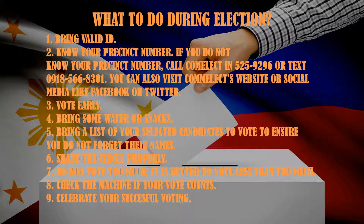Paraan para hindi masayang ang boto sa araw ng eleksyon. Una, magdala ng valid ID. Pangalawa, alamin ang precinct number kung saan kababoto. Pwede kang tumawag sa Comelec sa 525-9296, o mag-text sa 0918-566-8301. Pwede mo din visitain ang Comelec website o social media kagaya ng Facebook o Twitter. Pangatlo, bumoto ng maaga. Pangapat, magdala ng inumin at merienda dahil mahaba-haba ang pipilahin mo. Panglima, magdala ng lista ng iboboto para mapabilis ang iyong pagboto at hindi mo makalimutan ang mga pangalan.